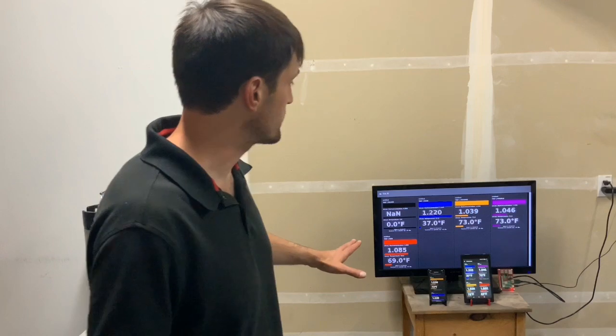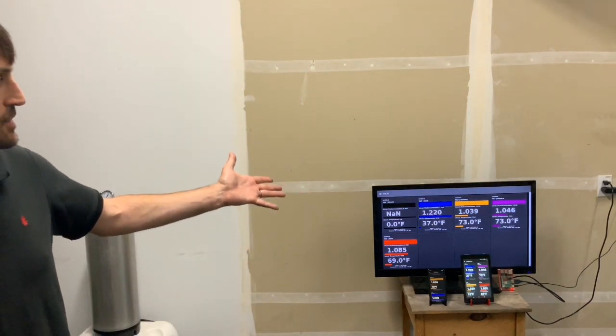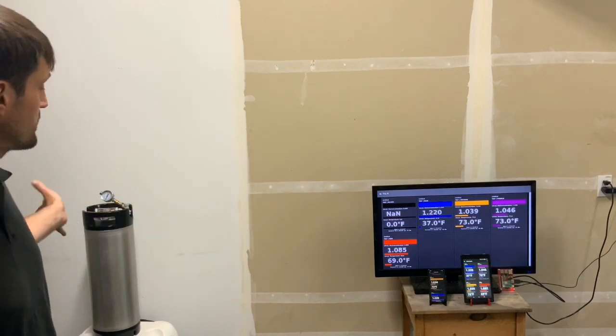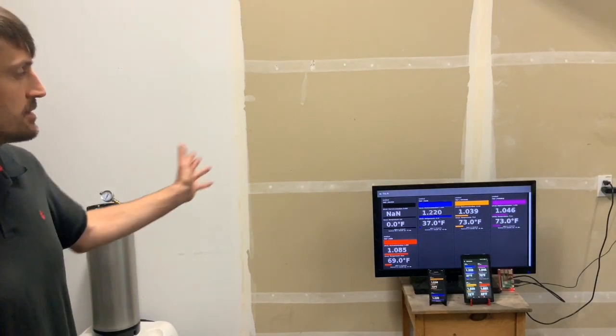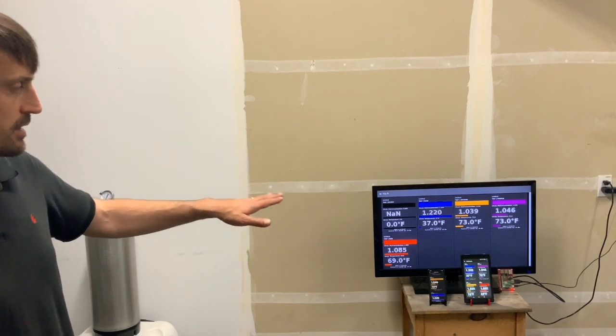So now it can reach these devices. You can see here, this orange is now transmitting from this keg to the Tilt Pi and Android and iOS devices.